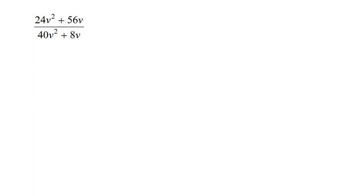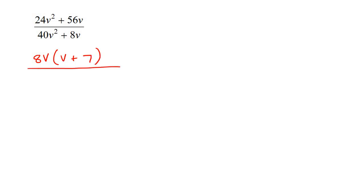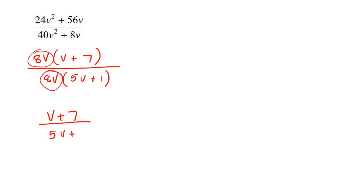In this next example, take out 8v as a common factor at the top — 8v is the largest you can take out, not just 4. You're left with 8v(v + 7). At the bottom, take out 8v as well, leaving 8v(5v + 1). The 8v factors cancel completely, so the final answer is (v + 7) over (5v + 1). We cannot cancel further because it is not one term over one term.